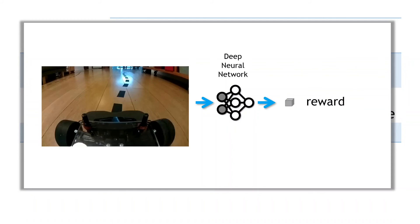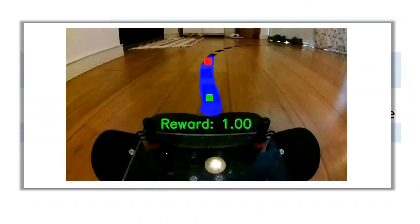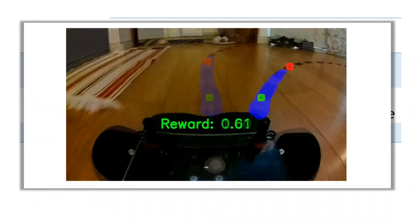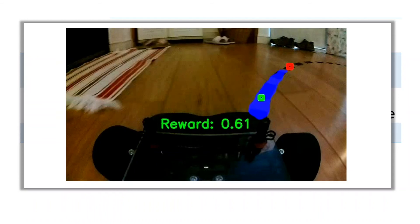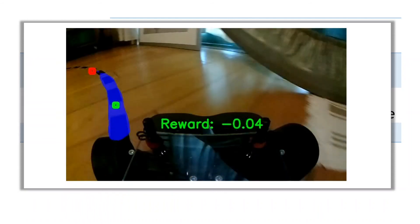The reward values range from a maximum of one, when the dashed track is centered in the image, and slowly drops off as the track moves from the center, hitting negative values at the extremes of the image.